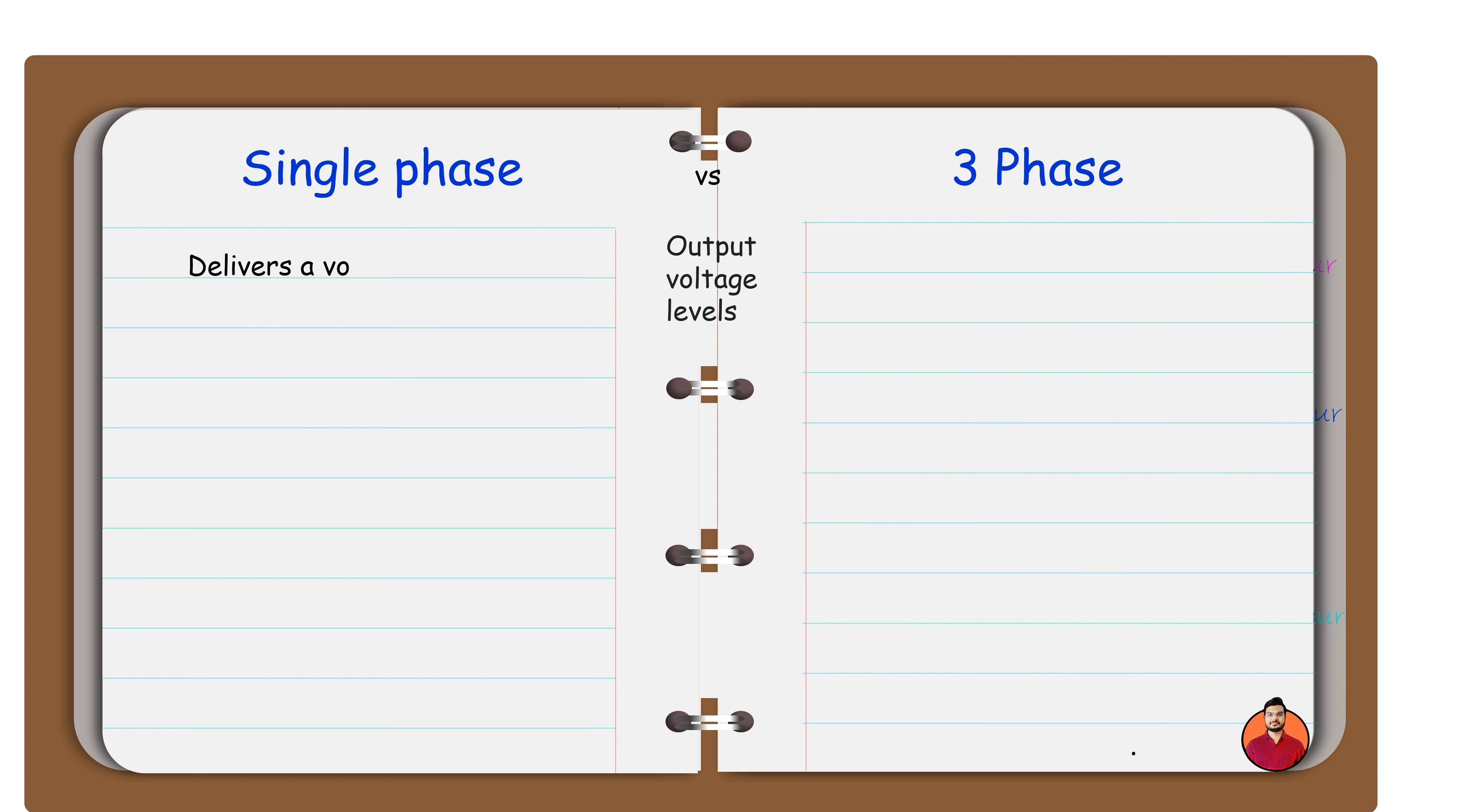A single-phase supply delivers a voltage level of almost 230 volts. Three-phase supply delivers a voltage level of almost 415 volts.